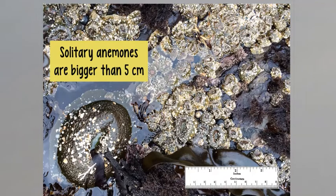On the bottom left-hand corner, you can see that this is a solitary anemone that is much bigger than 5 centimeters in diameter. Given the observations we learned previously, it has an avocado texture and a flaring base, meaning that it is a giant green anemone.